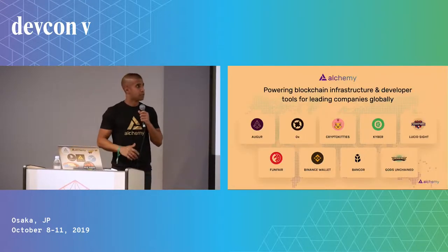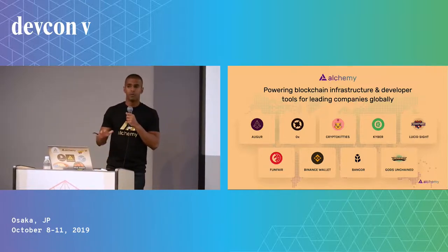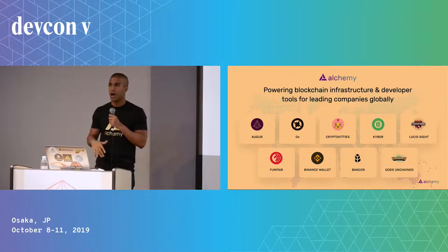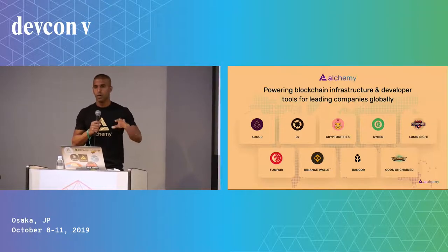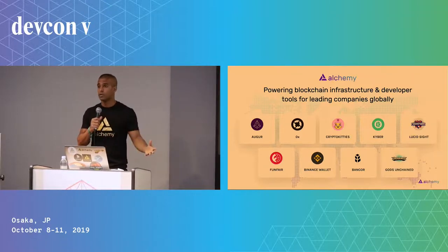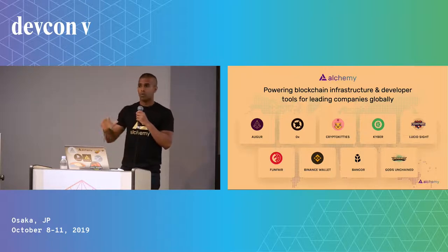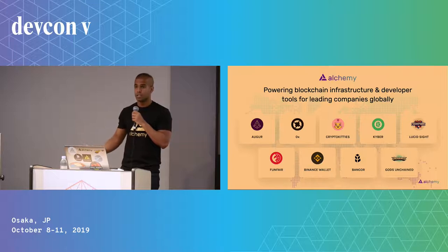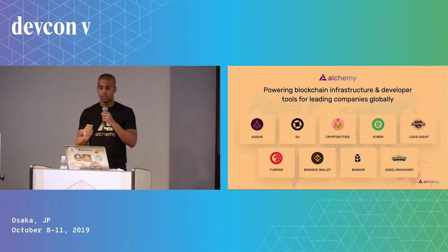What Alchemy does is we power infrastructure and developer tools for a bunch of different people across the space. We've been in pseudo-stealth, but we're about to do a big announcement. Our goal as a company is to push blockchain development forward by making it really easy for people to build applications. We believe that in order for blockchain to reach its full potential, we need users using real-world applications and getting value from that.